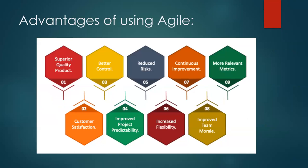These are the advantages of Agile. Superior quality product — because you're getting constant feedback on what work you are doing. Better control — everything is transparent, everything is in front of you, and there's a lot of collaboration, so you get better control on your project. Reduced risk — your costs are less because it's not at the end of two years that you get to know something hasn't worked; it's a very small change at a lower cost. Continuous improvement — based on the feedback you are getting, there will be continuous improvement in the way you do your work.